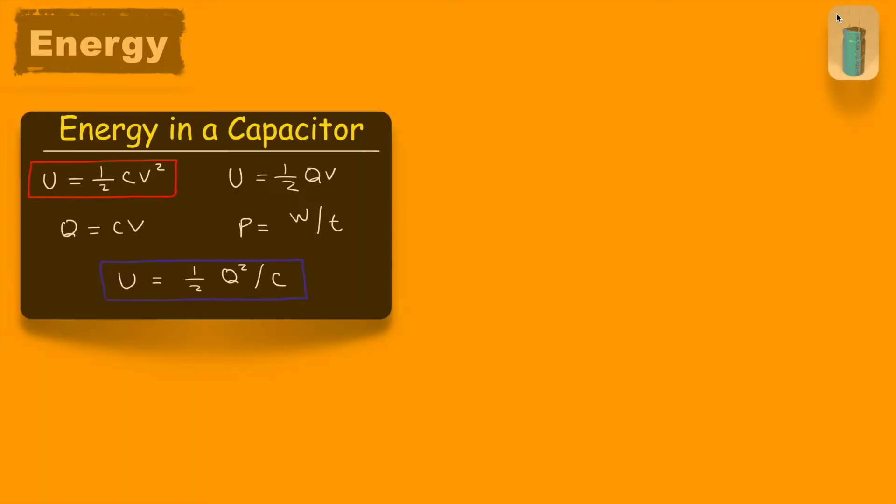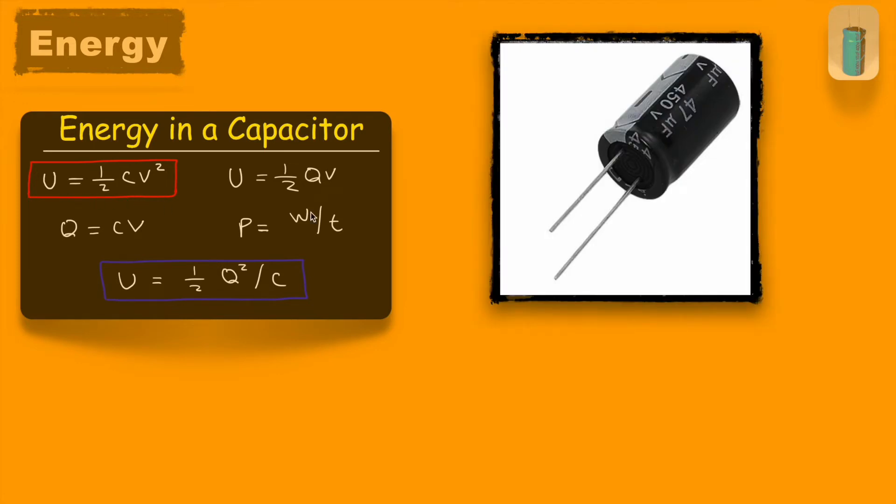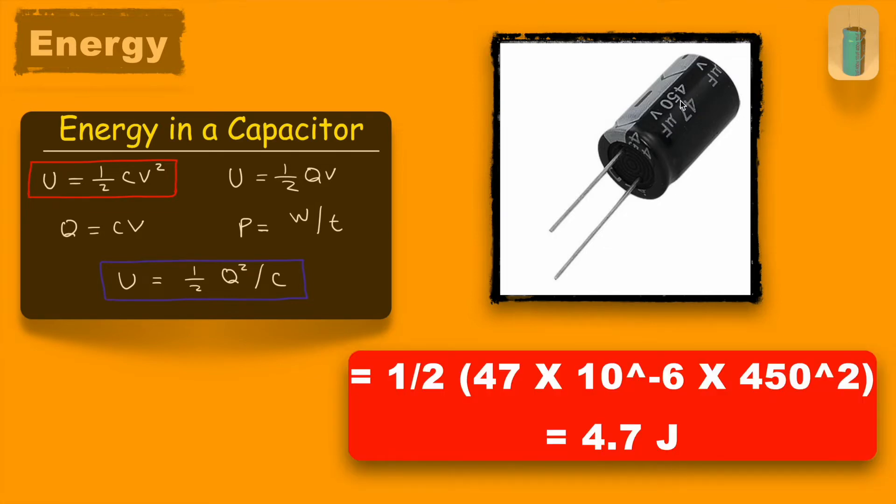But these two devices also differ for the amount of energy they store. If we see for capacitor, we know that energy stored inside the capacitor equals to half CV squared. With this formula, if we calculate the energy stored for this electrolytic capacitor of 47 microfarad and 450 volt, it can store the maximum energy of half, here the capacitance value is 47 microfarad, so 47 into 10 to the power minus 6 into V squared. Here maximum supply voltage can be connected, 450 volt, so 450 squared, so this comes out to be 4.7 joule.